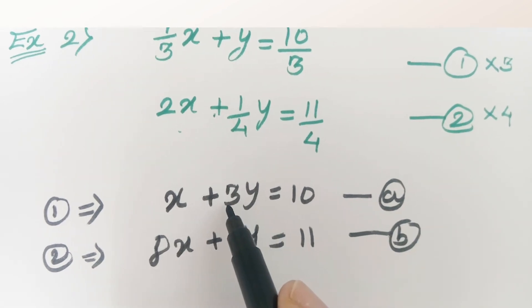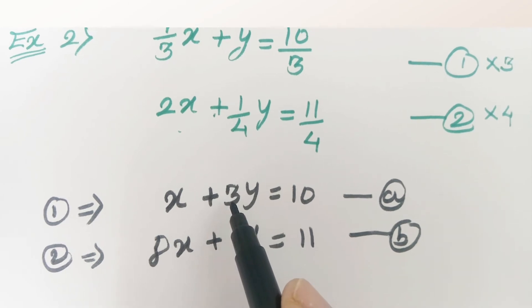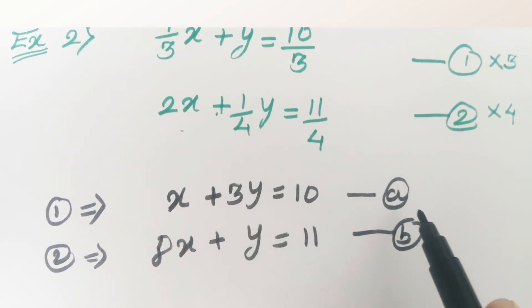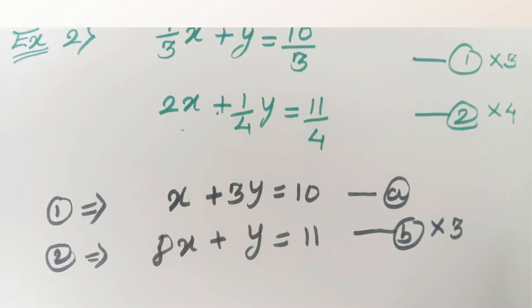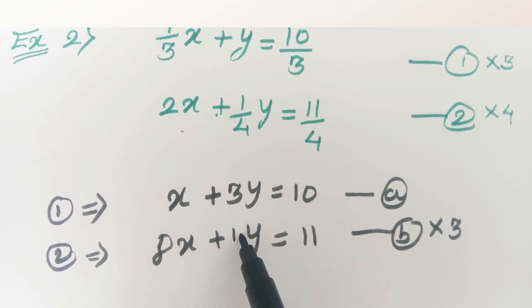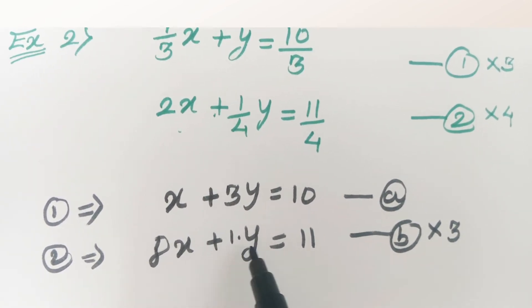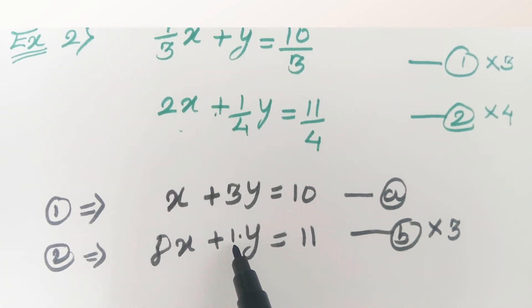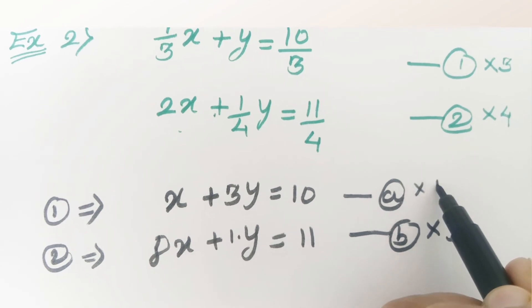We want to eliminate y. The coefficient of y in equation a is 3, so we multiply equation b by 3. The coefficient of y in equation b is 1, so we multiply equation a by 1 — meaning equation a remains the same. This makes the coefficients of y equal in both equations so we can eliminate y by subtraction.